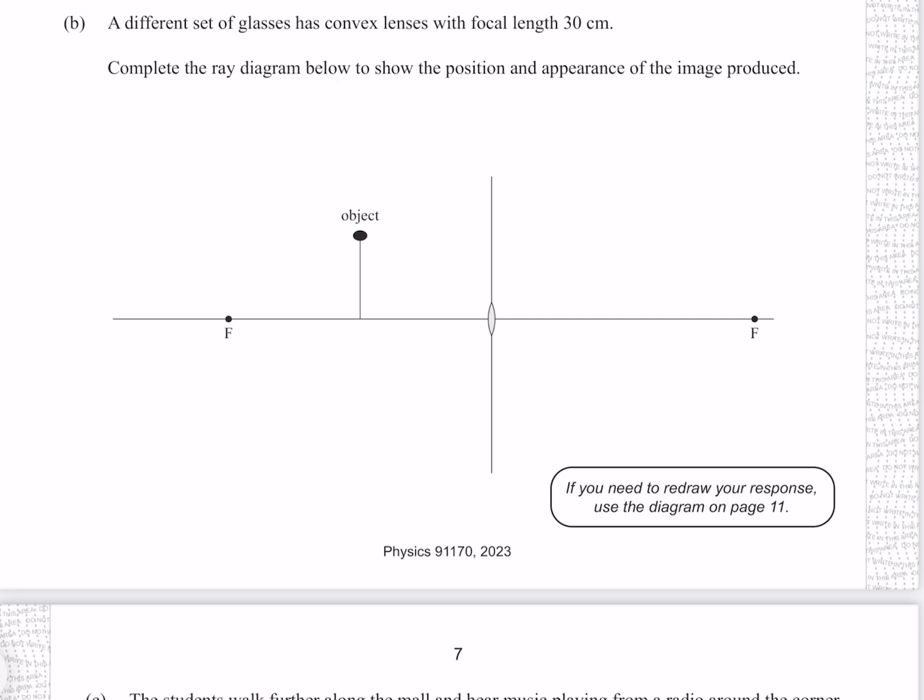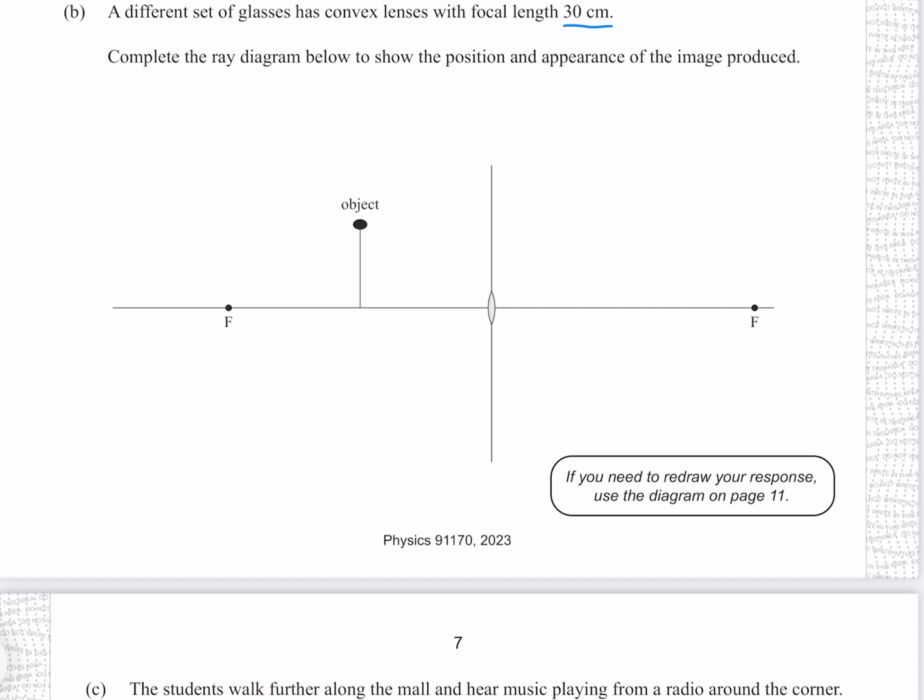A different set of glasses has convex lenses with focal length 30 centimeters. Complete the ray diagram below to show the position and appearance of the image produced. Our first ray goes straight through the middle, the second ray goes parallel to the axis and then refracts through the focal. As we can see these rays diverge, meaning that to find their intersection we need to draw virtual rays. And so we get our image somewhere around here, which is as best as I can draw it on my tablet. But as long as the image is enlarged, upright and virtual, and that your rays are drawn in the correct spirit, you'll get the full merit mark.